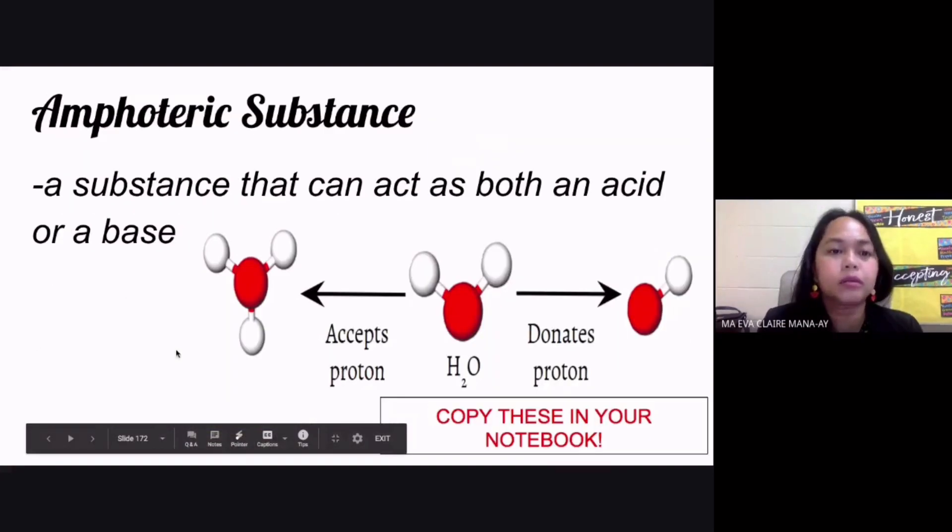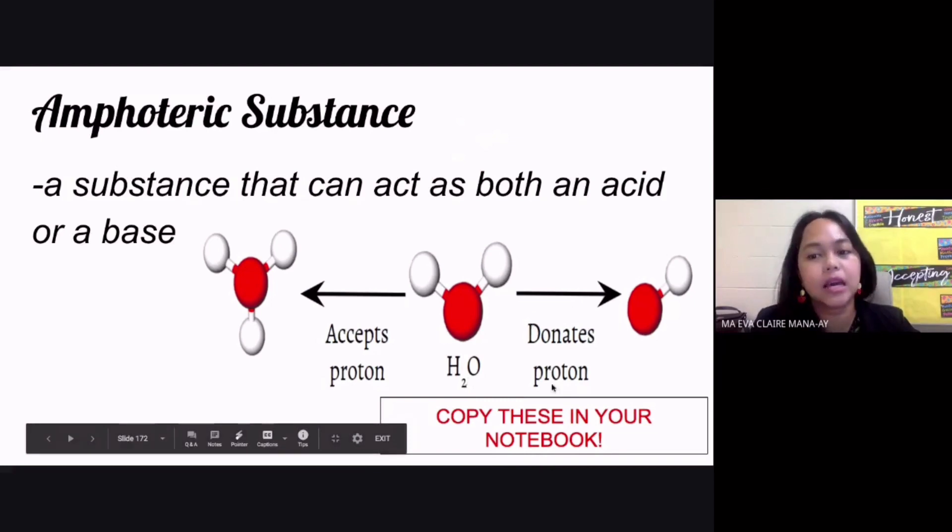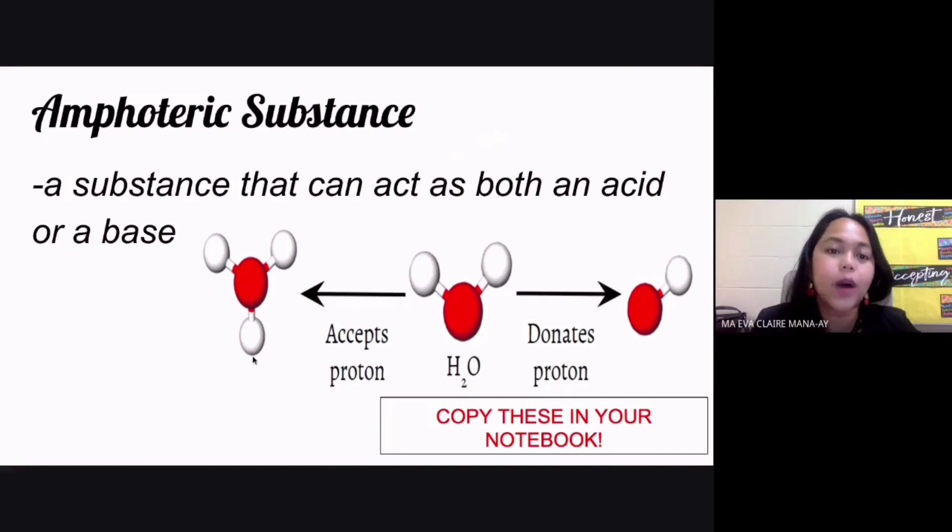Now, you've also heard about the term amphoteric. When you say amphoteric, this is a substance that can act as both an acid or a base. One classic example for this would be your water. Sometimes it can donate a proton, it can act as an acid and donate a proton, or sometimes it can also act as a base and accept a proton. So it entirely depends on the substance that it reacts with.